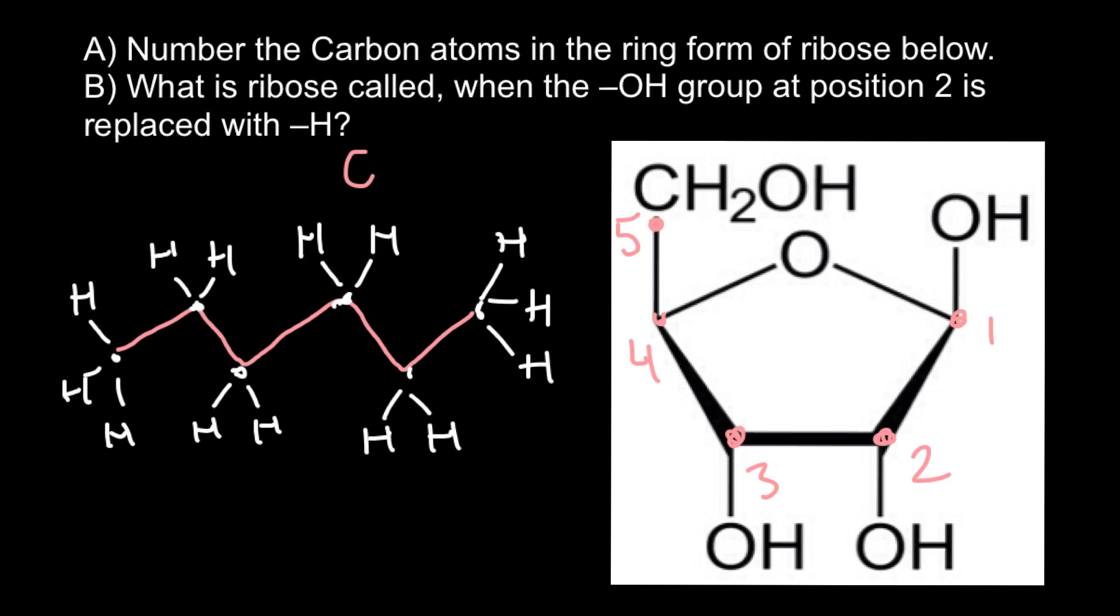So the second question: what is ribose called when the OH group at position two is replaced with just hydrogen?